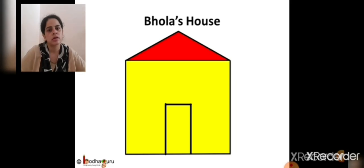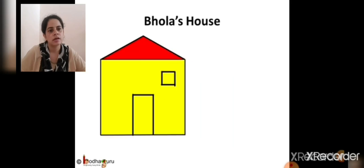But how will Bola get fresh air and sunlight inside? We need a window. Let us draw a window: standing line, standing line, sleeping line, again a standing line, and a sleeping line. Hooray, the window is ready!